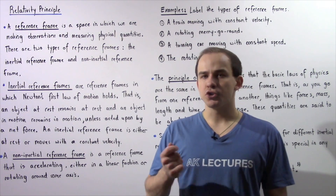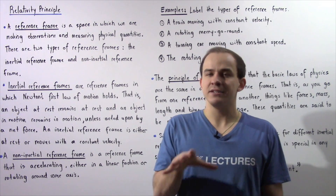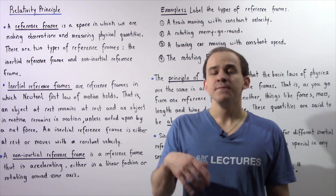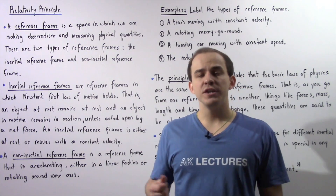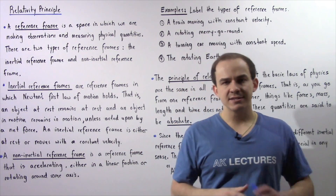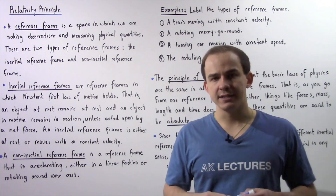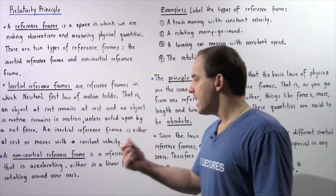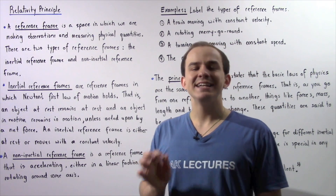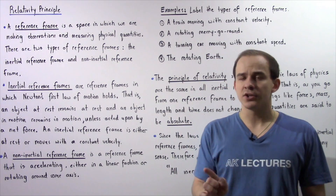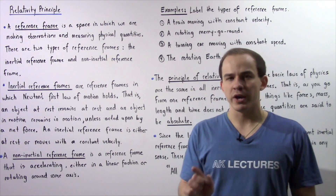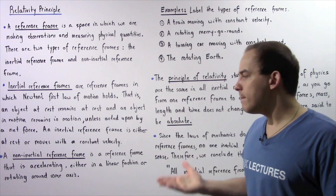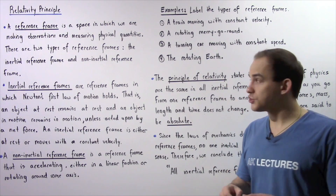An inertial reference frame is basically either static — at rest — or moving with a constant velocity. On the other hand, a non-inertial reference frame is one that is accelerating, either accelerating in a linear fashion or rotating about some fixed axis.